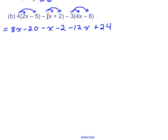And if you're doing these, watch your signs. Now, again, this one is not simplified yet. We have to collect our like terms. So we're going to start by putting the X's together. So we'll put 8X minus 1X minus 12X.